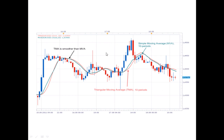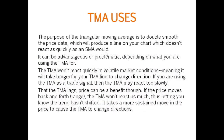The purpose of the Triangular Moving Average is to double smooth the price data, which produces a line on your chart that doesn't react as quickly as an SMA would. This can be either an advantage or problematic depending on what you are using the TMA for. The TMA won't react quickly in volatile market conditions, meaning it will take longer for your TMA line to change direction.